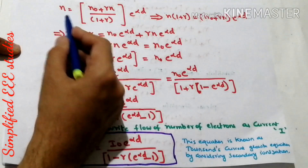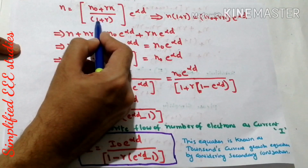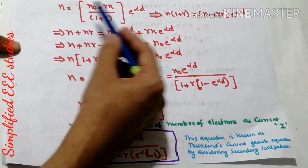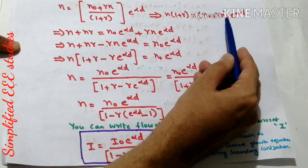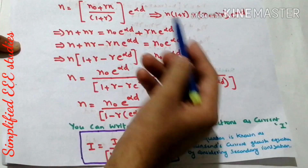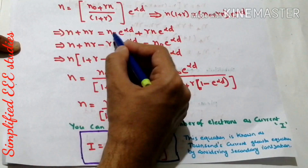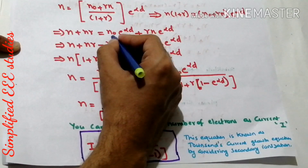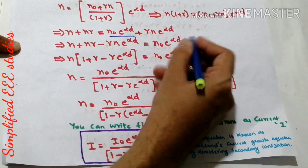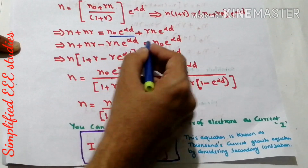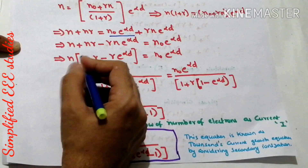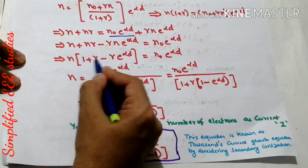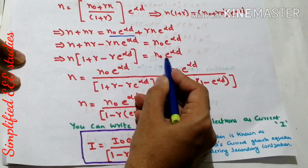Simplifying, N = (N₀ + γN) / (1 + γ) · e^(αd). Bringing (1 + γ) to the left-hand side: N(1 + γ) = (N₀ + γN)·e^(αd). Expanding: N + Nγ = N₀·e^(αd) + γN·e^(αd). Rearranging, taking all N terms to the LHS: N + Nγ − γN·e^(αd) = N₀·e^(αd). Taking N as a common factor: N[1 + γ − γ·e^(αd)] = N₀·e^(αd).